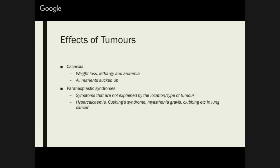Paraneoplastic syndromes — symptoms not explained by the type of tumour. For example, hypercalcaemia, Cushing syndrome, and clubbing can occur in various forms of lung cancers. Myasthenia gravis can occur in a thymoma.